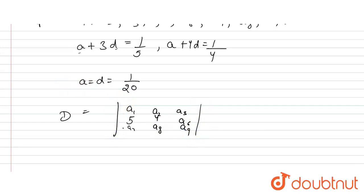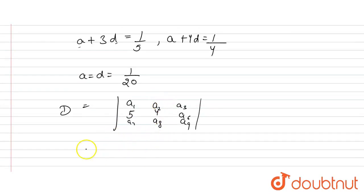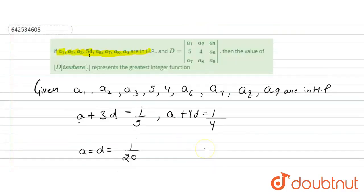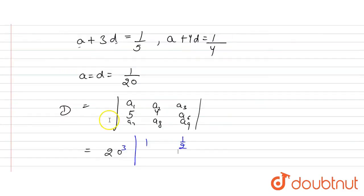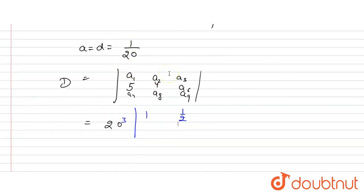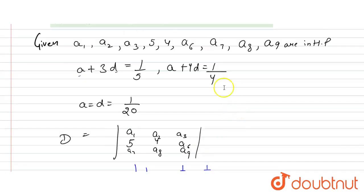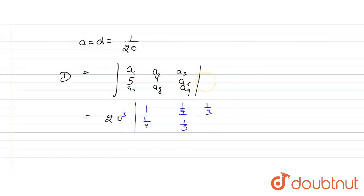This is what we have given. Now, what we do is, we just put the values here. We have 20 cube and A1 we have 1, A2 we have 1 by 2. We have 1 by 3, this is 5, 1 by 4, 1 by 5, 1 by 4, 1 by 5, 1 by 6 and 1 by 7, 1 by 8, 1 by 9. This is what we have now.